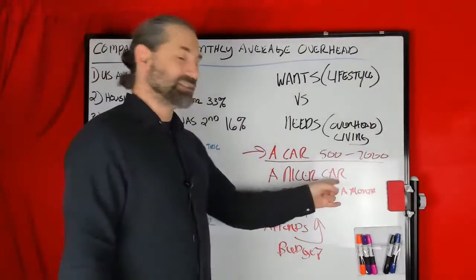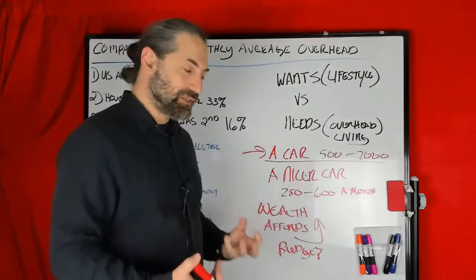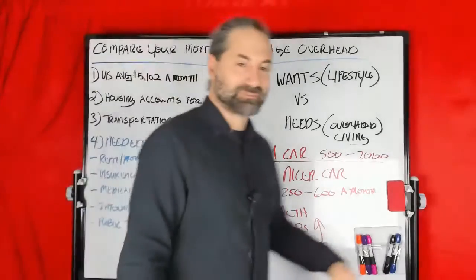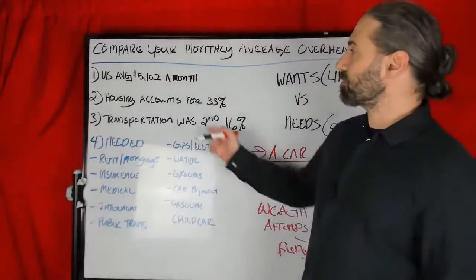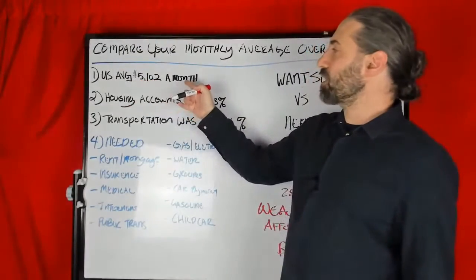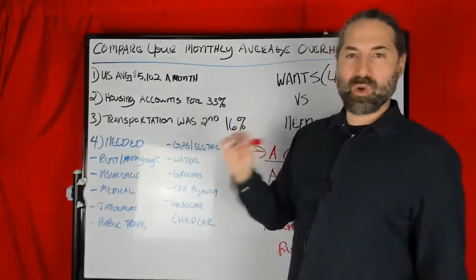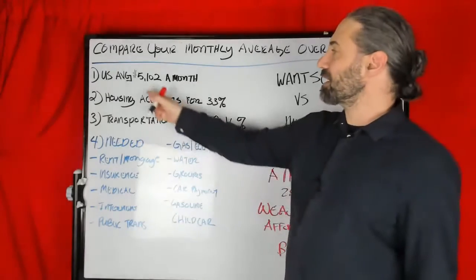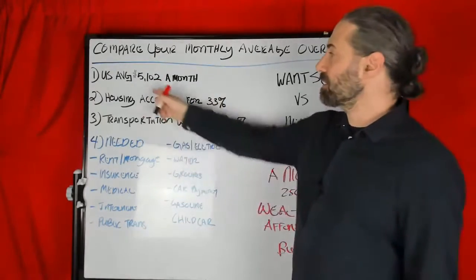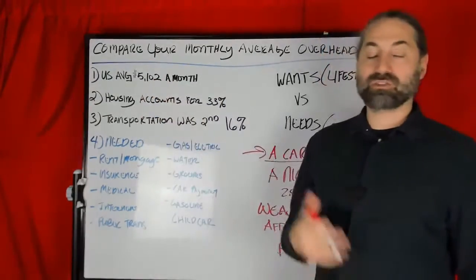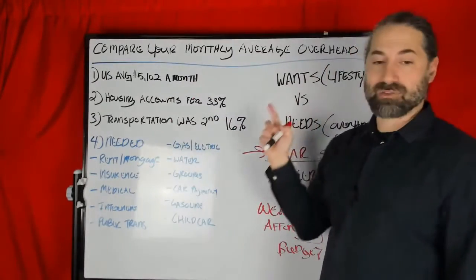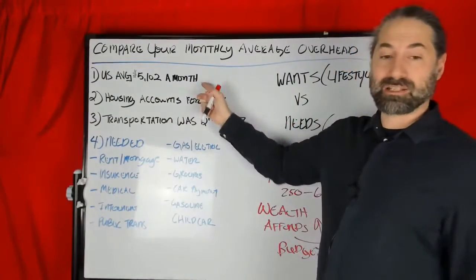So that's the major difference between the wealthy mind and somebody who wants to be wealthy. The want is that they want a nicer car. And sometimes you have to, for people who just jumped on, the average monthly overhead for a U.S. citizen living in a rental or a house or anything is $5,102. So right away, you say to yourself, what is your monthly average overhead? Are you spending more or less than that?